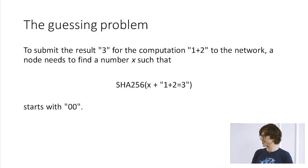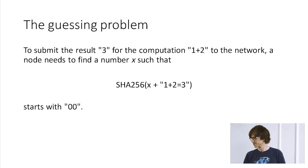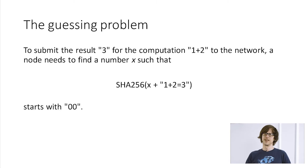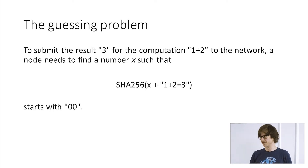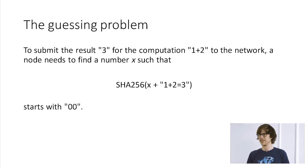The guessing problem Alice has in mind works as follows: when a node receives a computation request like 1+2 and computes the output 3, it then tries to solve a problem based on a one-way hash function. Specifically, it tries to find a value x such that when you concatenate x, the computation request, and the answer, and compute the hash of this concatenation, the hash has some property — for example, it starts with two zeros. Because cryptographic one-way hash functions are hard to invert, the only practical approach is to guess x, compute the hash, check the property, and repeat. It's a genuine guessing problem requiring a lot of computational power.